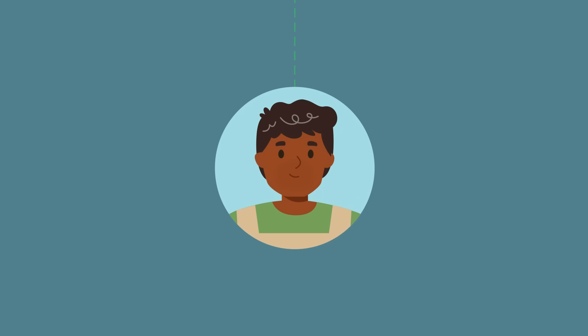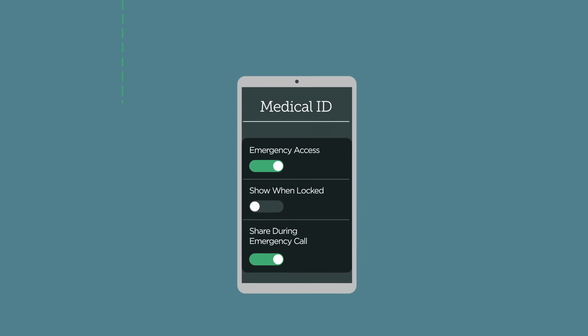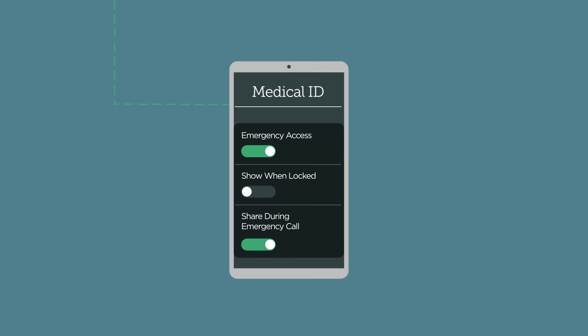To make your Medical ID available from the lock screen on your iPhone, turn on Show When Locked. In an emergency, this gives information to people who want to help.